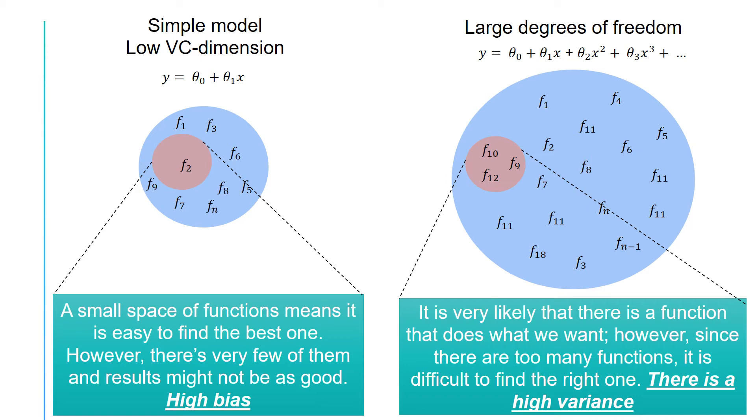That is, if you are given a different sample for your training data, you might end up with a completely different function. In this case, you have high variance but low bias.